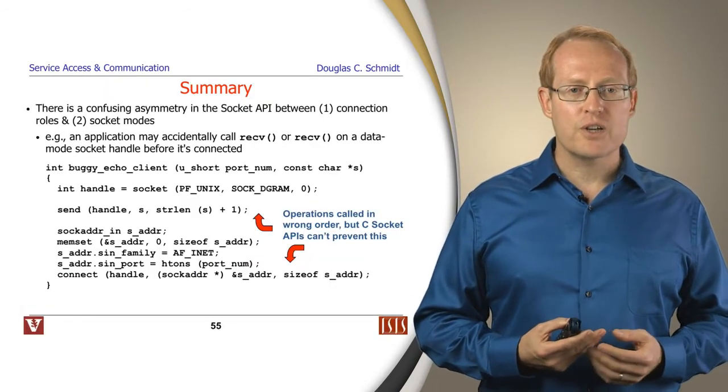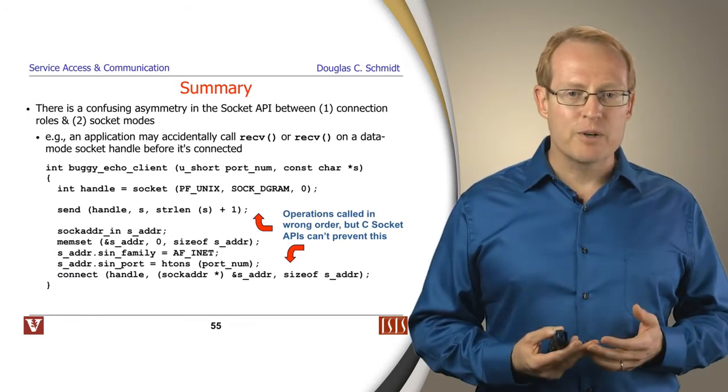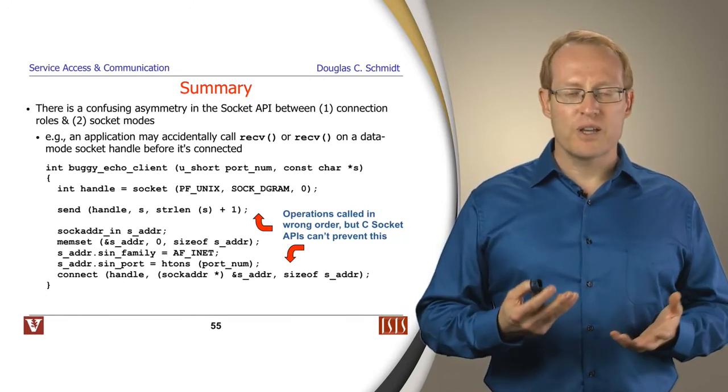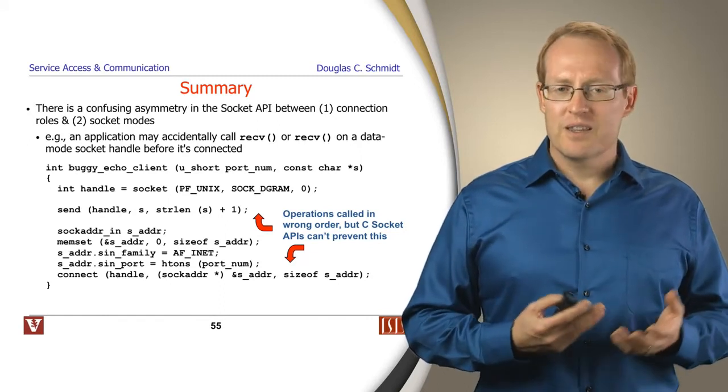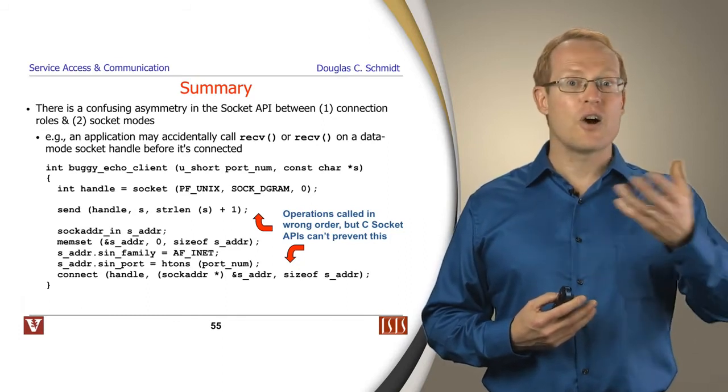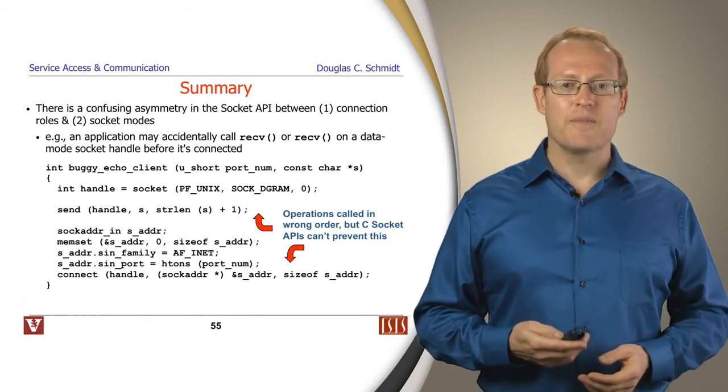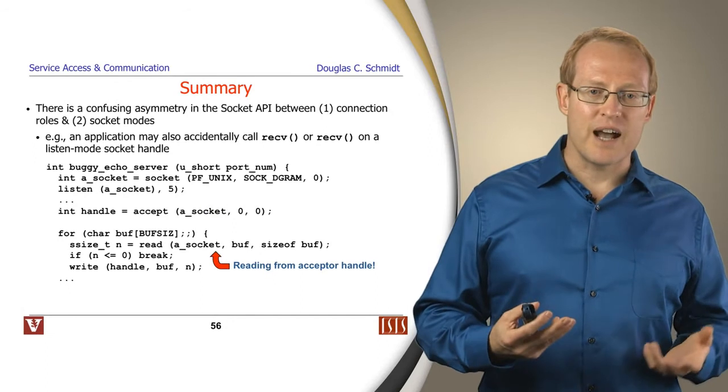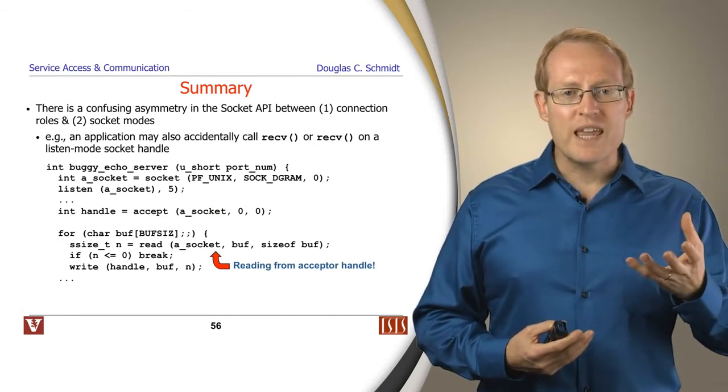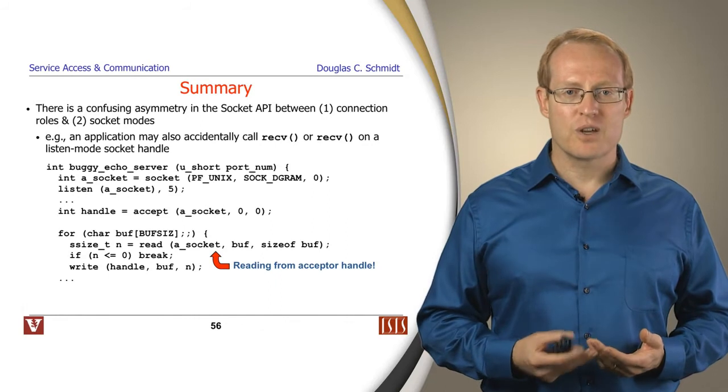To summarize this particular discussion, unfortunately, the socket API has a bit of a confusing asymmetry between connection roles and the socket modes. For example, here's a problem that can arise when you're programming sockets. There's nothing to stop you from calling the socket factory, getting back a socket, and then accidentally calling send on that socket before you connect it. The API won't prevent you from doing that. Likewise, there's nothing to stop you from getting a socket, and then accepting on that socket, and then trying to do a read on the listen mode socket, which is also incorrect. But there's nothing that the API can do to make those things go away.